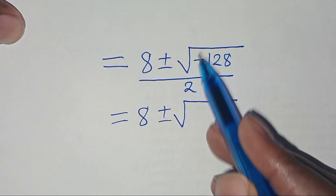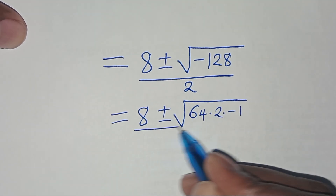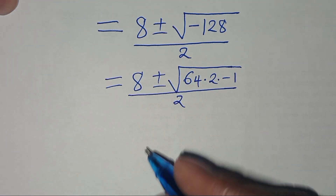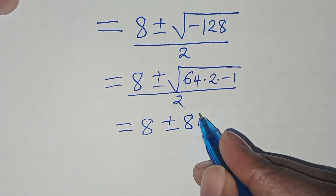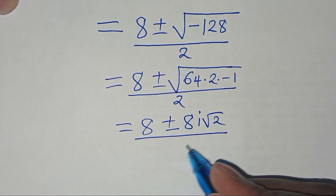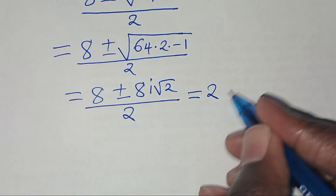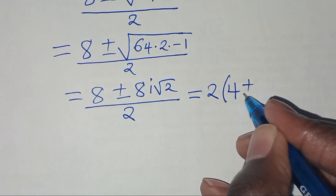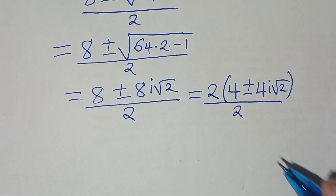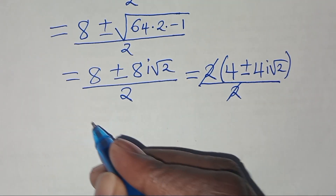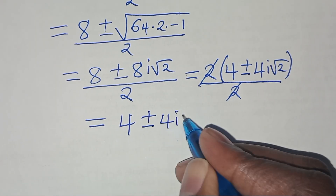We express minus 128 as 64 times 2 times minus 1. So we have 8 plus or minus the square root of 64 times the square root of 2 times the square root of minus 1, divided by 2. This gives 8 plus or minus 8i root 2, divided by 2. Factoring out 2 in the numerator and cancelling with the denominator gives 4 plus or minus 4i root 2.